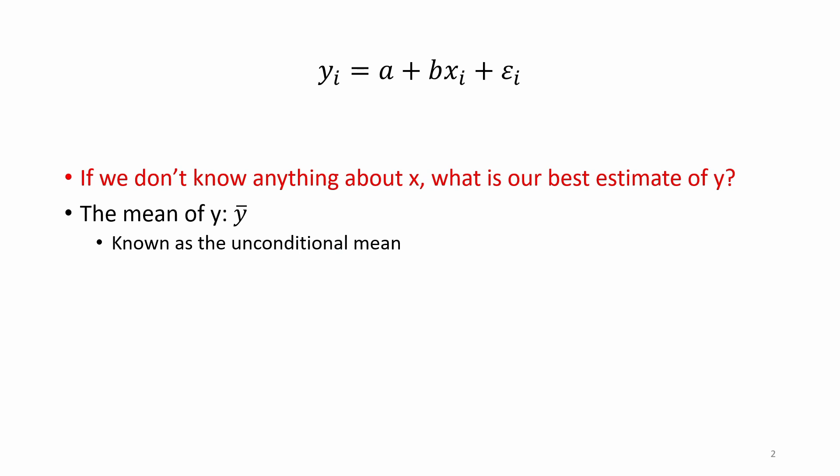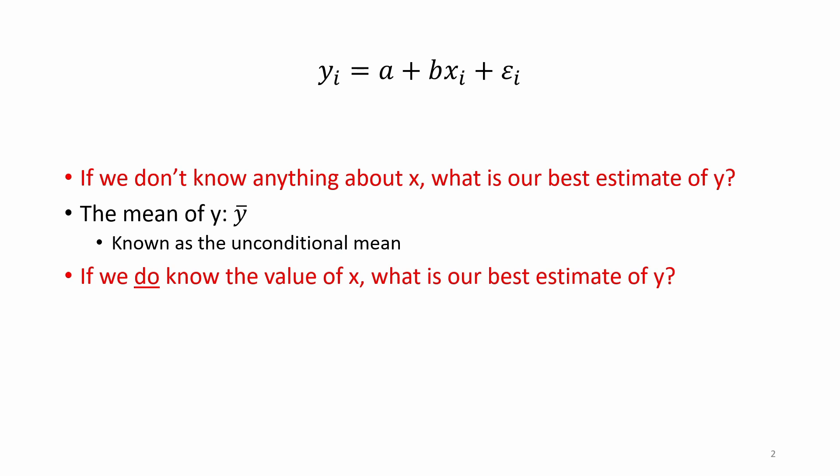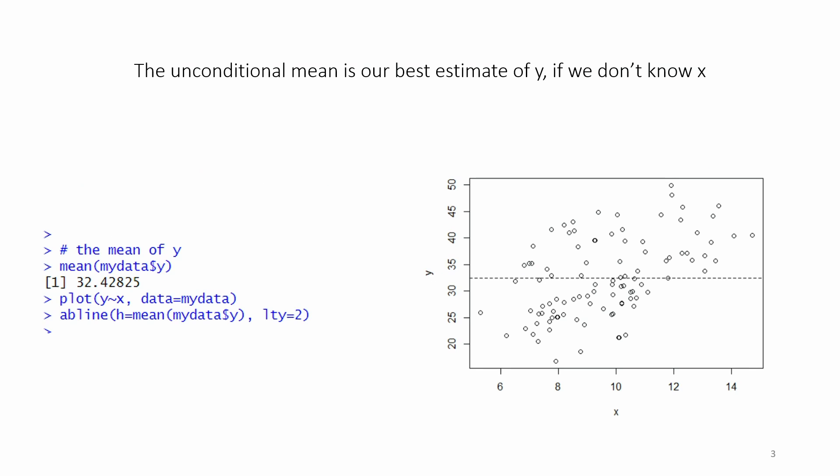This is known as the unconditional mean because we can't condition on x. In the case where we do know the value of x, our best estimate of y would be the conditional mean of y — that is, y conditional on x — which is the expected value of y given x. The unconditional mean is plotted here as a dashed line over the cloud of data points.